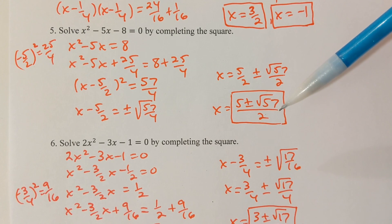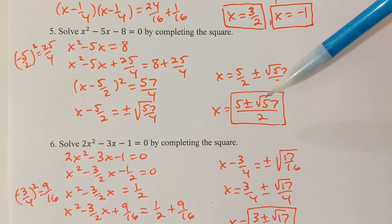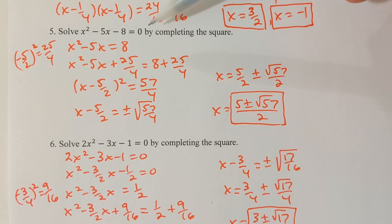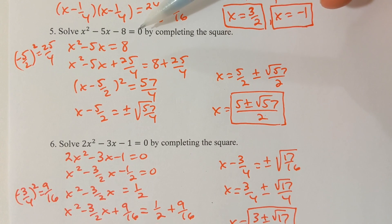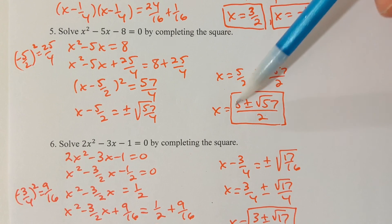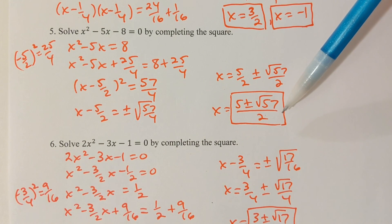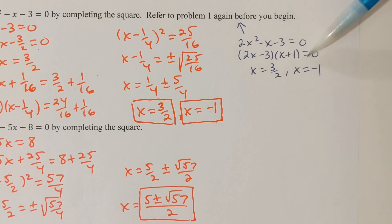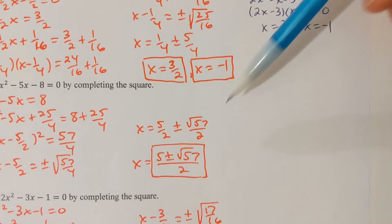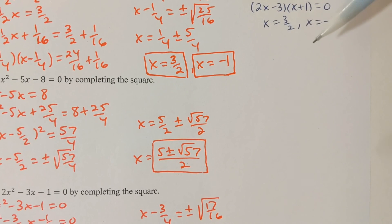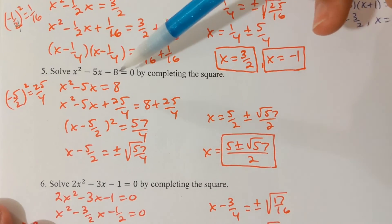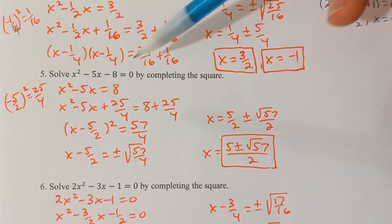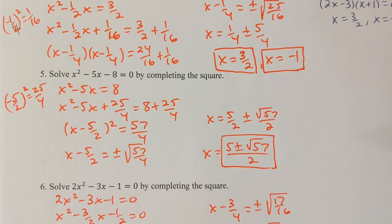I'm using the plus-minus condensed version. In this problem, the reason we would not easily see the factors is because these irrational numbers are the factors. When factoring, you're using counting number values and placing the signs — you're not checking numbers like these. A factoring situation for something like this would not be anything that anybody would ever think of because it doesn't factor nicely.